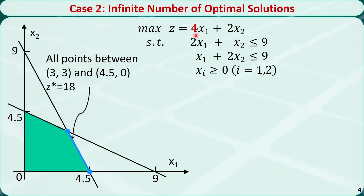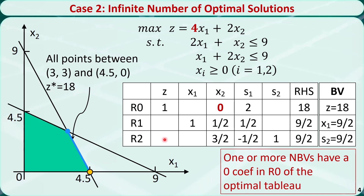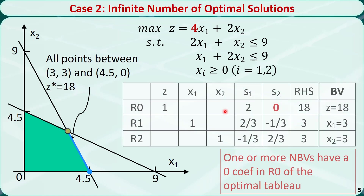If we modify the objective function and change this coefficient from 3 to 4, then we can find in this figure that we will have an infinite number of optimal solutions between point (3, 3) and point (4.5, 0). In the optimal tableau, we have a non-basic variable with a coefficient of 0 in row 0 — this is an indicator that we may have another optimal solution. Proceeding one more step using x2 as the entering variable, we find another optimal solution with the same z value. Therefore, we have an infinite number of optimal solutions.